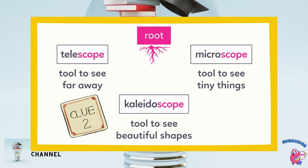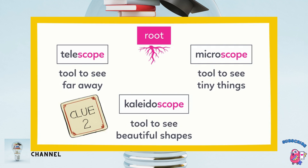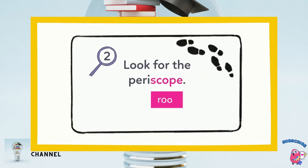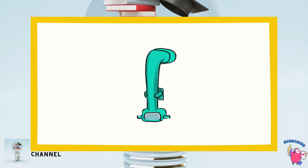All of these words have scope as a root. To figure out what scope means, we can look for a common word or idea in all of the definitions. The root scope means to see — all of the definitions have that in common. So a periscope is something we can see through. We can see through that — let's use it to look for the next clue!